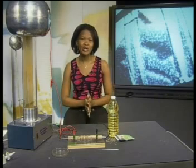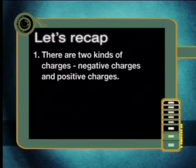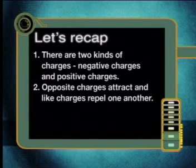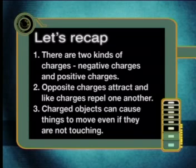Let's first very quickly recap what we have already learned about objects that are charged with static electricity. In our previous two lessons, we have discovered that there are two kinds of charges: negative charges and positive charges. Opposite charges attract and like charges repel one another. Charged objects can cause things to move even if they are not touching them. Where have you come across a similar set of properties before? Right, when you learned about magnets.